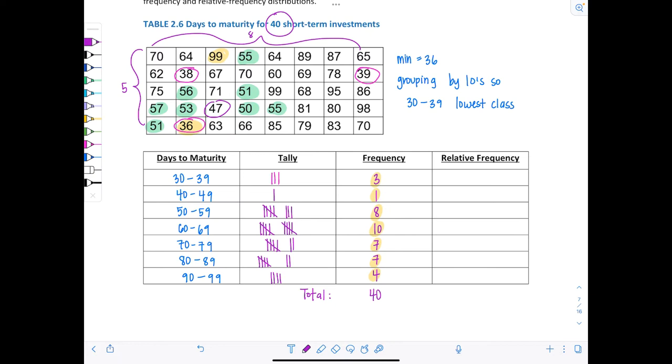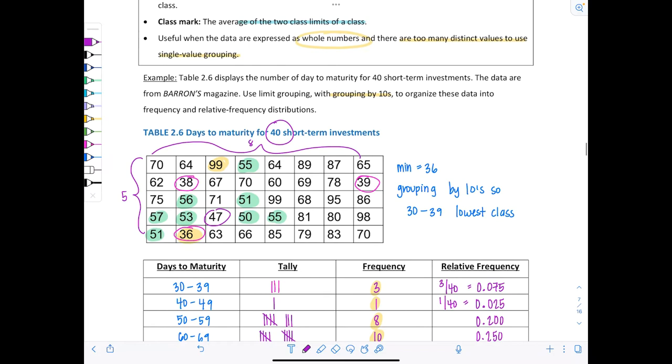For relative frequency, you take each of the frequencies and divide by 40. So 0.075, 0.025, etc. Be careful when you're doing your homework, especially online homework - just round to however many decimal places the problem directs you because it won't accept the answer if you don't round to the correct number. And these better sum up to one, which they do. This is called limit grouping.